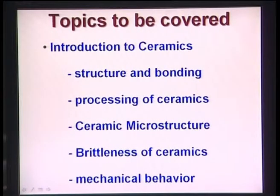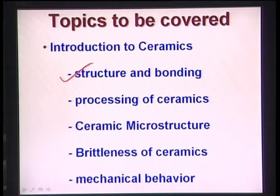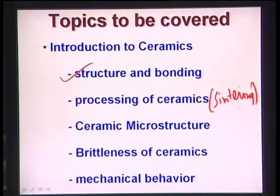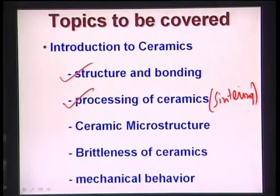Several things will be discussed through a series of slides. First is structure and bonding — how the microstructure looks and what is the typical bonding of ceramics. Then, processing of ceramics, mostly the sintering aspect, will be discussed, as sintering is the most commonly used processing route to make different shaped components. Third is ceramic microstructure — how the sintered microstructure looks and how it differs from other materials.